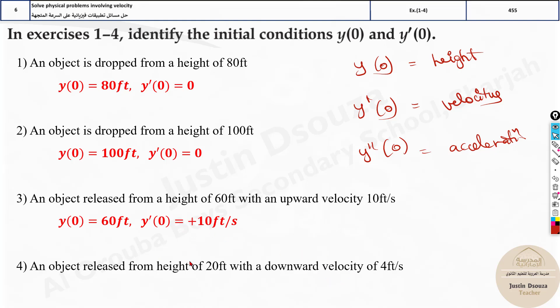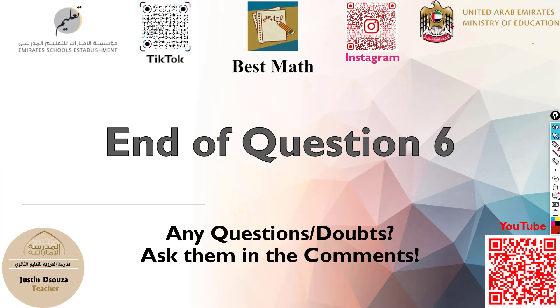And over here you can see the height is 20 feet and downward velocity of minus 4 feet, so it's minus 4. So this is how we solve these problems. I think this is the easiest of all, and even question 2 was very, very easy. I'll see you all in the next question.